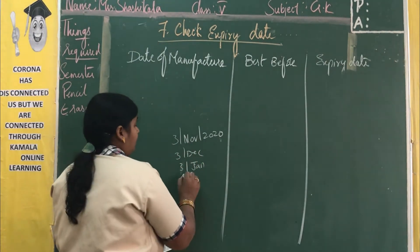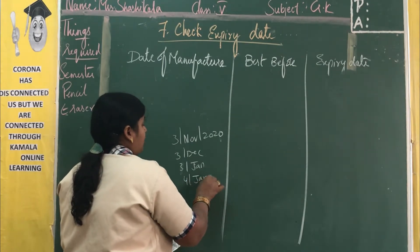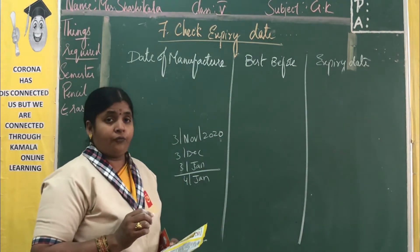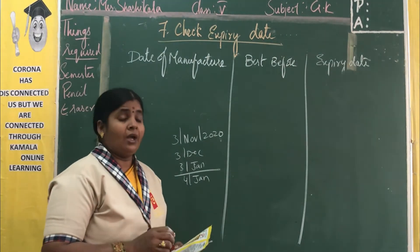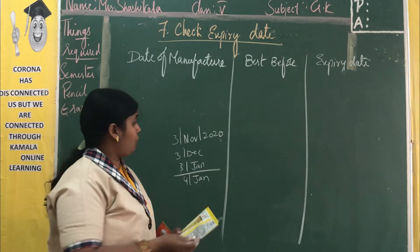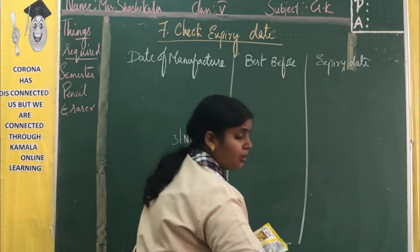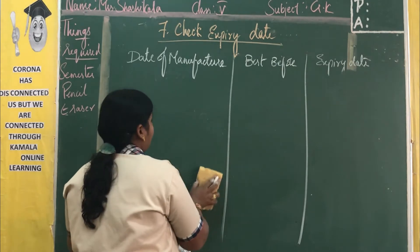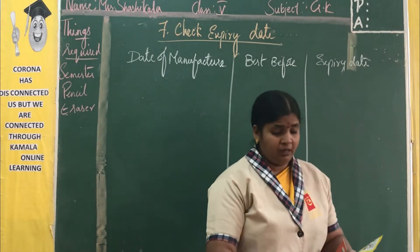After that it changes into unhealthy food and we are not supposed to eat it, as it may lead to different health problems. We are not supposed to eat it. So we get the help of the calendar. We are going to calculate the manufacturing date, best before, and expiry date.